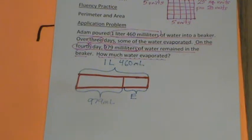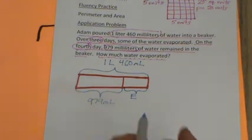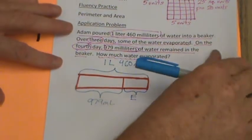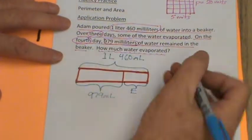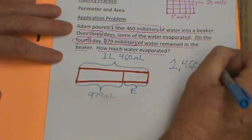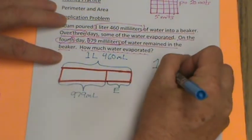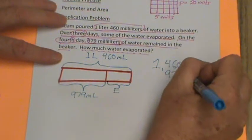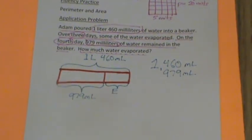So let's try to figure this out a couple of different ways. Are you with me? We could use a standard algorithm. Just convert both of these, convert that to milliliters. How many milliliters would it be? We know that's 1,000 and 460, so we'll just put 1,460. We've got to put the unit there so we remember, right? And we're going to subtract 979 milliliters. Okay.